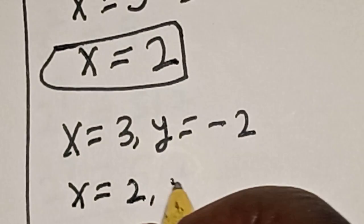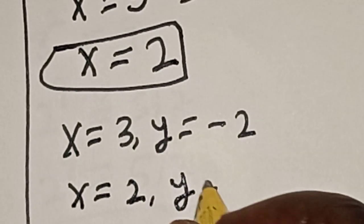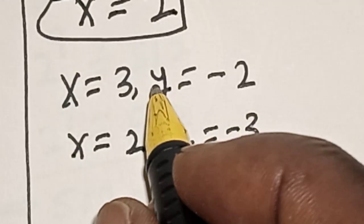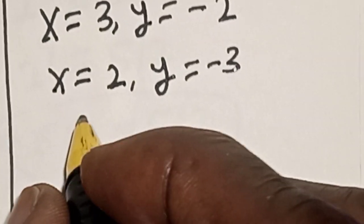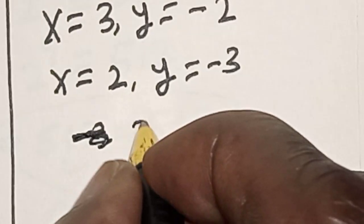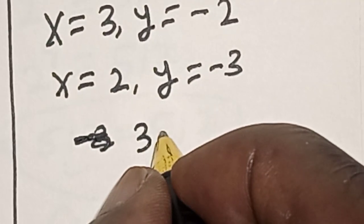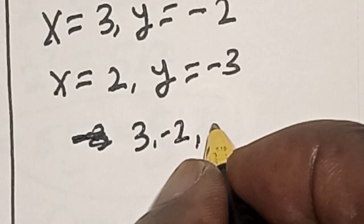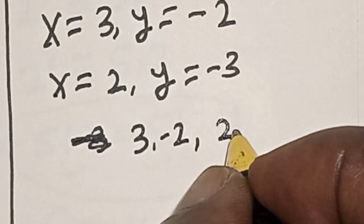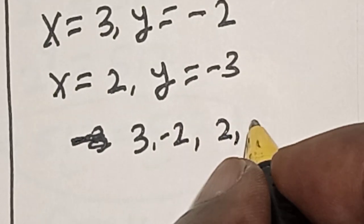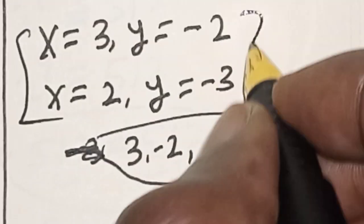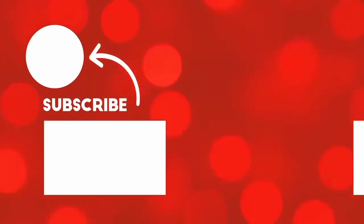So that is our answer. We have the solution pairs (3, minus 2) and (2, minus 3). Don't forget to like, share, comment and subscribe. Thank you.